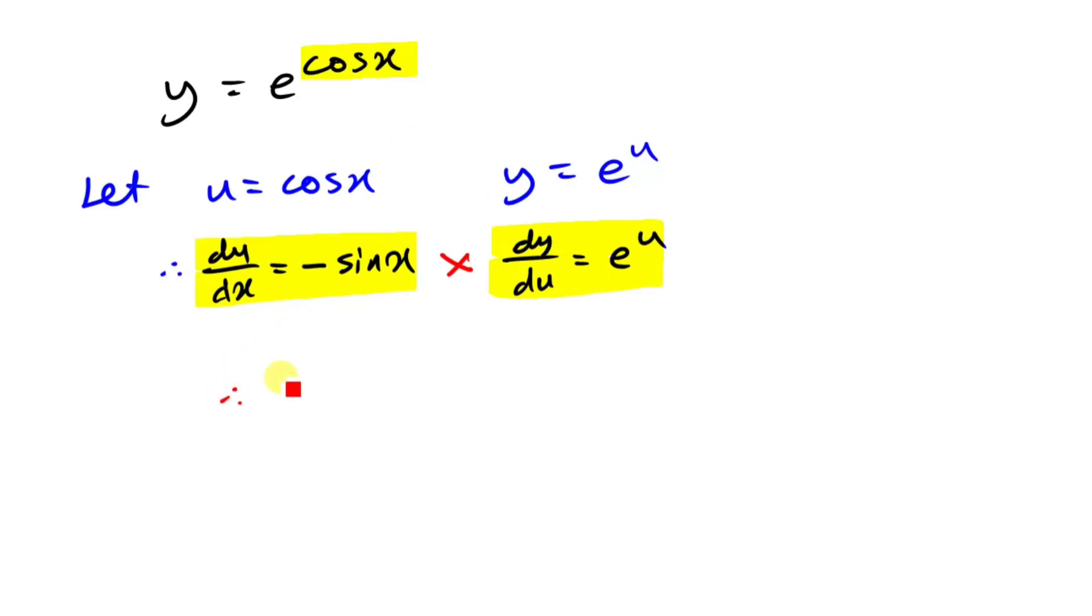okay, therefore dy/dx should equal minus sine x times e to the u. And now with all problems here, we have to always update the u with its original term. In this case, it's cos x.